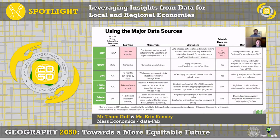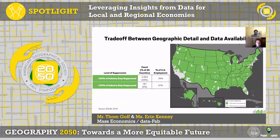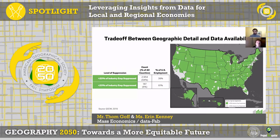The geographic resolution offered by those private vendor datasets can be really great when combined with some of the more reliable datasets we trust. There's a tradeoff between geographic detail and data availability. Typically, outside of large metro areas, at least one fifth of industry employment is suppressed — just under 40% for some of total US employment. This creates a big barrier to conducting really detailed analyses in rural or non-metro areas.